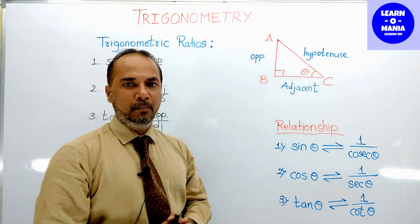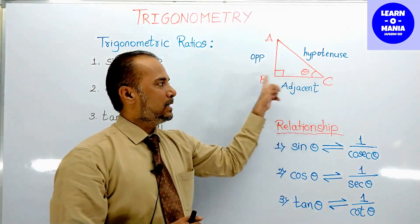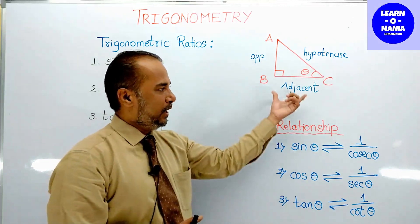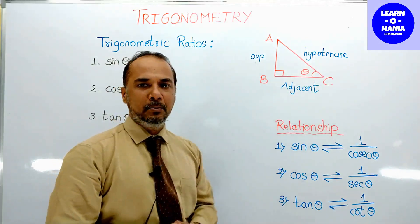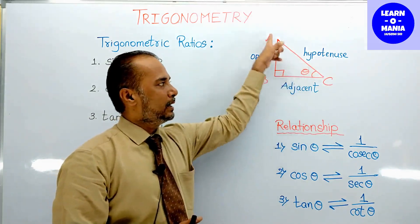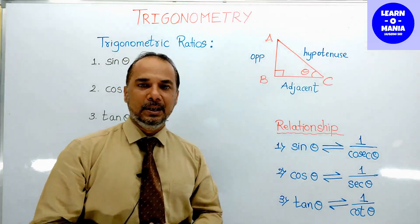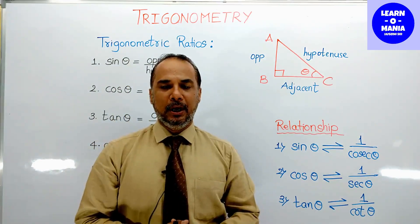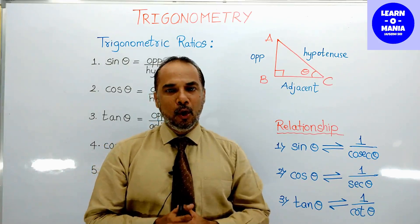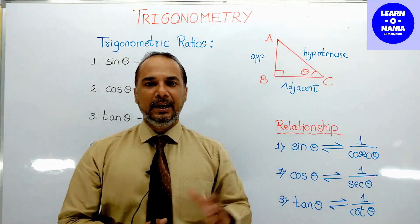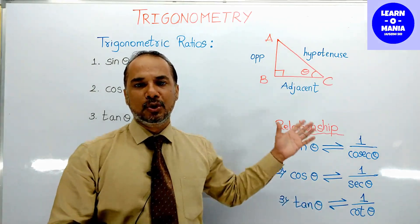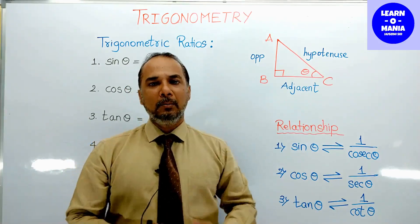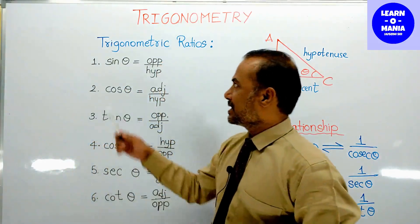So remember: the side opposite angle C is AB — we call it the opposite side. The side next to angle C is BC — we call it the adjacent side. And the side in front of the right angle, AC, is called the hypotenuse. So now you know where opposite, adjacent, and hypotenuse are.